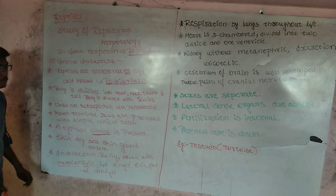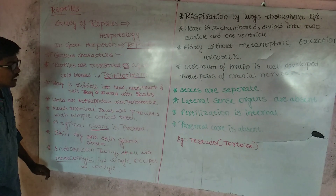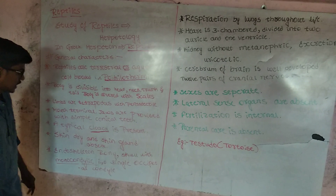In the case of the frog, skull with dicondyle — that is double occipital condyle.